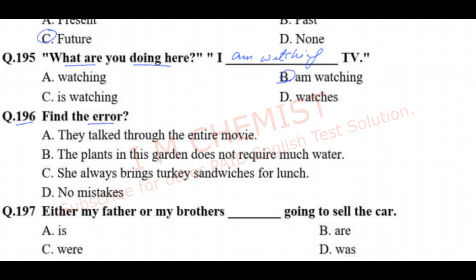Question number 196: find the error. We have to read all these sentences and identify the incorrect one. The sentences are: 'They talked through the entire movie' — correct; 'The plants in this garden does not require much water' — option B; 'She always brings turkey sandwiches for lunch' — no mistakes. Option B is our answer.